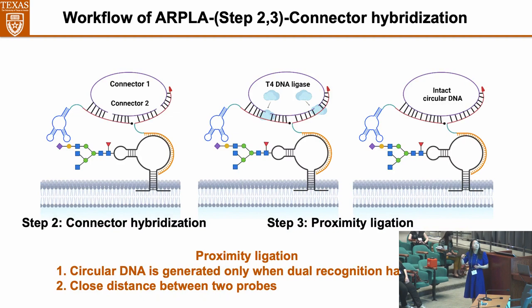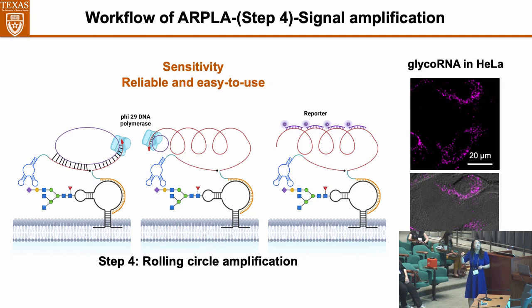After placing the glycan probe and RNA probe close to the glycoRNA, we introduce two connectors. The connectors hybridize with the two probes and form a circular structure, but there is a gap between the two connector probes. We add T4 DNA ligase to seal the gap and generate an intact circular DNA. The intact circular DNA then serves as a template, with the RNA binding probe serving as a primer. With the help of DNA polymerase, we perform in-situ rolling circle amplification to generate a very long single-strand DNA. This DNA hybridizes with a reporter DNA probe to introduce a fluorophore close to the glycoRNA, lighting up all the glycoRNA as dot-like signals that indicate their distribution in cells.